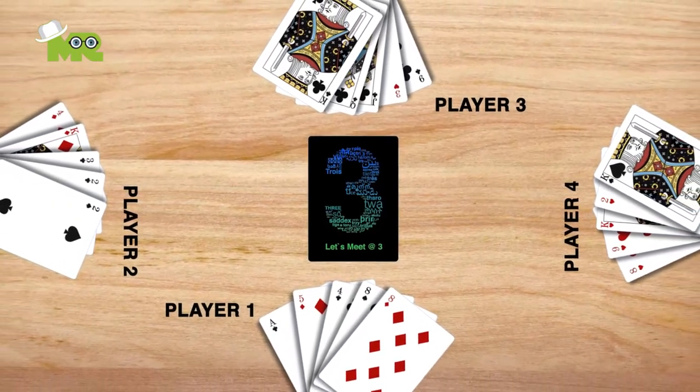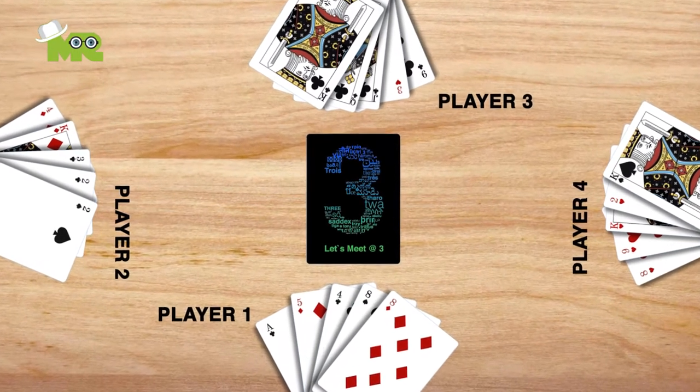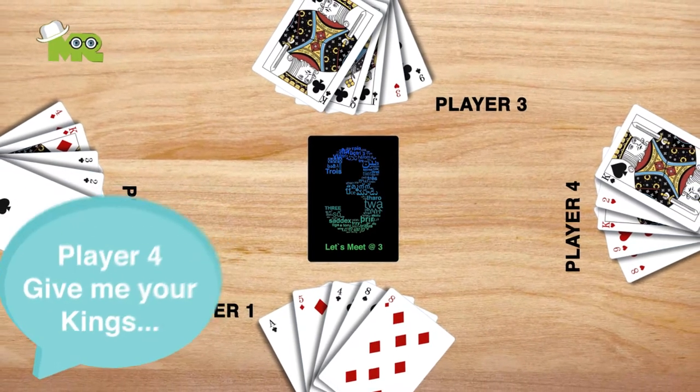The game initiates when the player sitting to the left of the dealer looks directly at any opponent and calls out to address the opponent by name, specifying the rank that they want from ace down to two. For example, give me your kings.